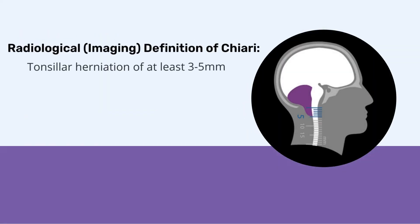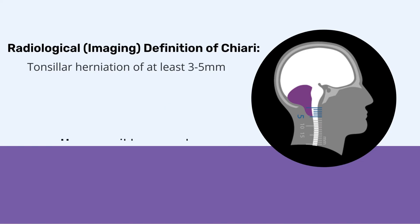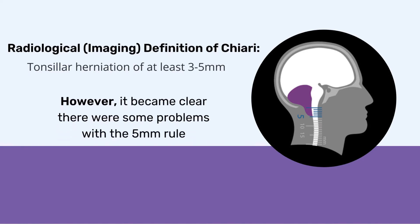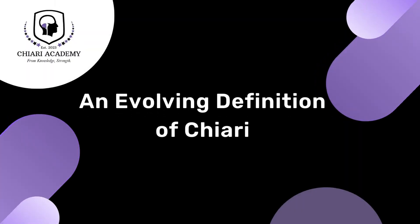From this, the radiological definition — meaning based on imaging — of Chiari emerged as tonsillar herniation of at least three to five millimeters. Over time, this evolved to five millimeters and became known as the five millimeter rule. However, as time went on and MRIs became more prevalent, it became clear there were some problems with the five millimeter rule, which ultimately led to the evolution of the definition of Chiari.